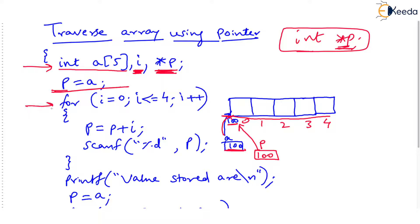Now look at the for loop, starting 'i' from 0 and going up to 4. Consider i is 0. This line says 'p = p plus 0', so p remains 100. Then the scanf: you are scanning some integer, and whatever you input will be stored at the address given by p. Since p is 100, if you input 10, it will be stored at address 100 — that means it goes into the array.